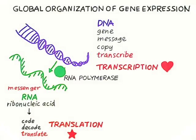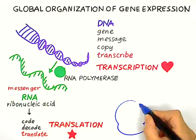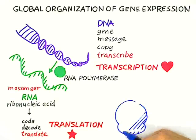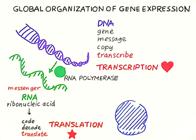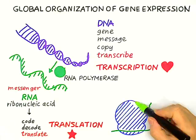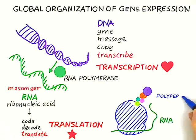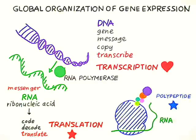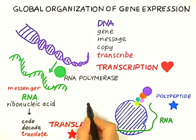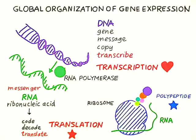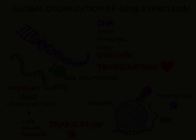Without translation, there is no life. Translation employs a giant enzyme which will interpret the information on messenger RNA and assemble amino acids into what is called a polypeptide, which is also often called a protein. This giant enzyme, present in very large numbers in every cell, is called the ribosome.